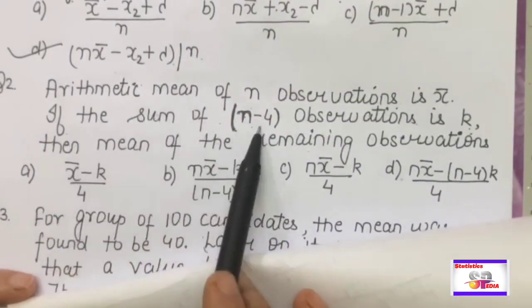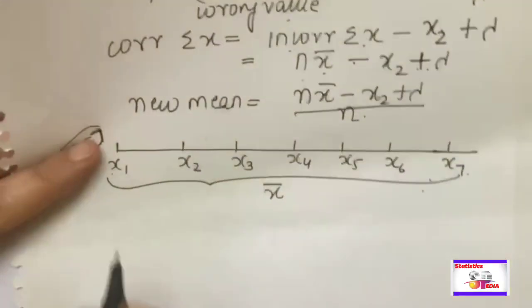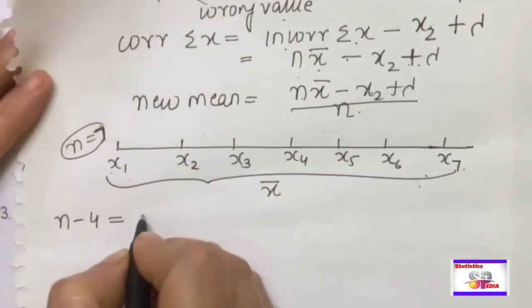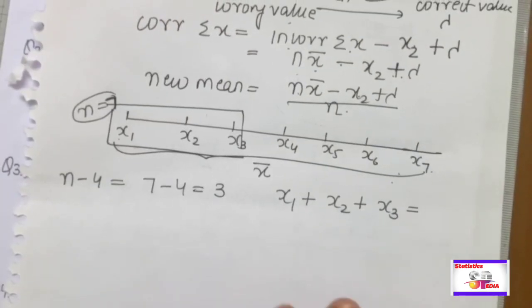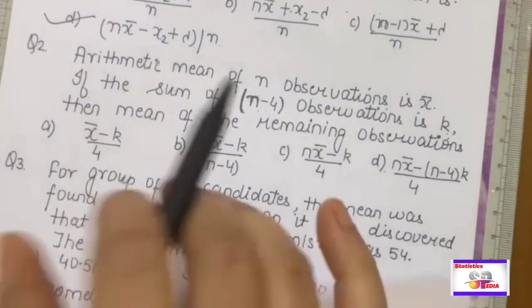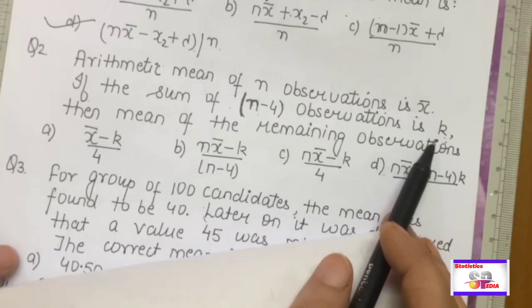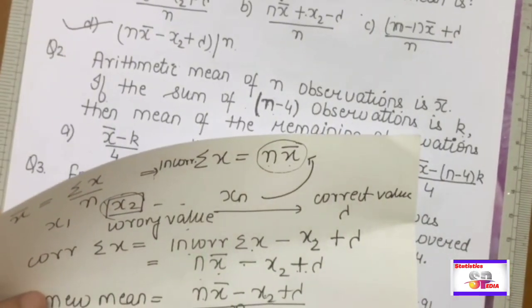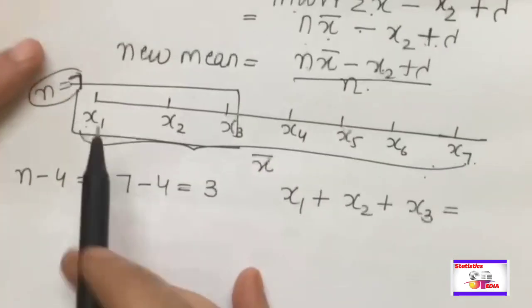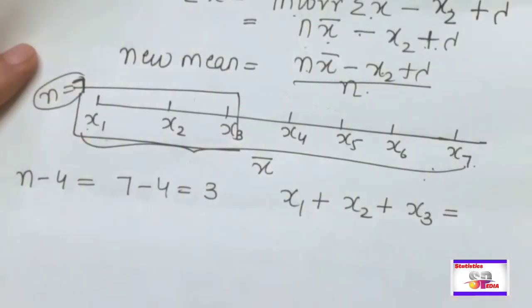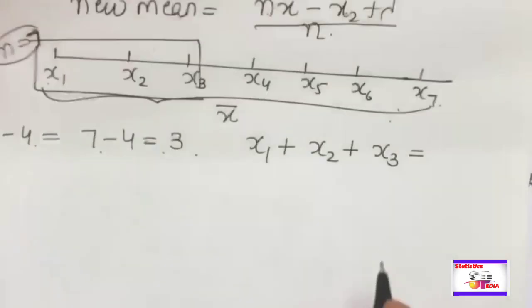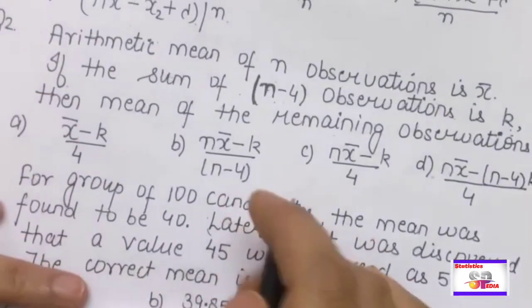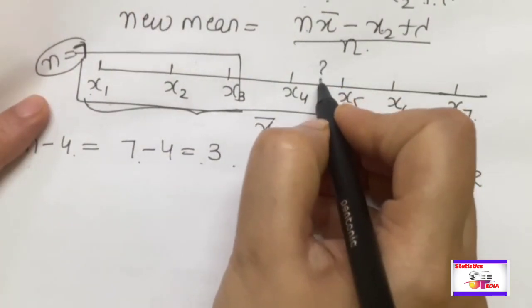The question says the sum of (n-4) observations is k. With n = 7, n-4 = 3. So 3 observations have sum k. The question asks to find the mean of the remaining observations. By definition: x̄ = (x1+x2+...+x7)/7, so the total sum = 7·x̄. The sum of the first 3 observations = k, and the remaining sum is x4+x5+x6+x7.